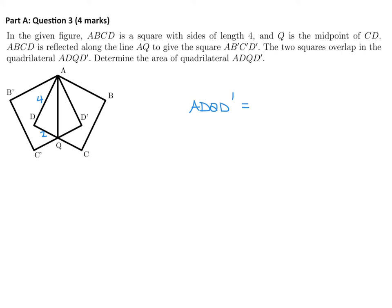So ADQD prime, which is basically this shape, would be two times ADQ. So two multiplied by the area of ADQ triangle. Well, the triangle ADQ, we can easily figure out that area. It would be one-half base times height. The base is two, and the height is four. So that looks like two times four, which is eight. And there you go. That's the answer to the question.